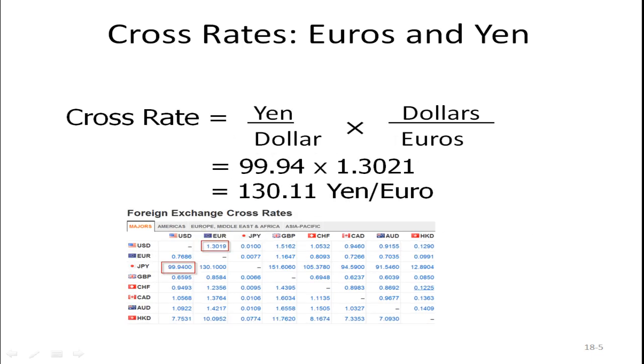Likewise, if we were interested in finding the yens per euro, again I've recreated this table, we could take the yen, the number of yen it takes to buy one US dollar, which is 99.9400, multiply it by the number of dollars it takes to buy one euro, which is 1.3021, and if we multiply those two together, we get 130.11. Now the exchange rate right here is 130.100, and either that's due to some rounding or to some transaction costs. But technically they should be exactly the same in the absence of transactions costs.